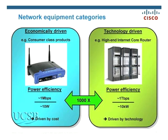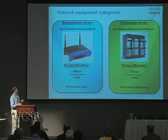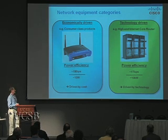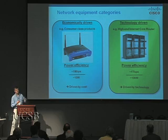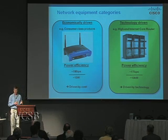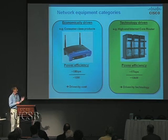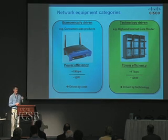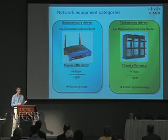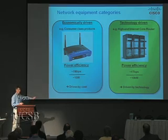A home router has around a megabit per second of capacity burning about 10 watts, and cost constrains efficiency improvements. Whereas a core router rack has about a terabit of capacity — a million times more than the home router — consuming about 10 kilowatts, which is 1,000 times the power for a million times the capacity. To make the core router more efficient, I need silicon that can do more work for the same power.